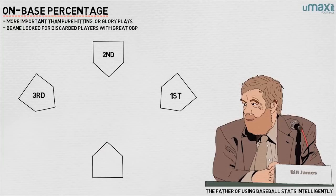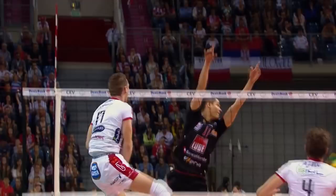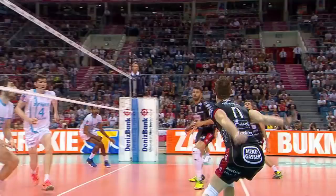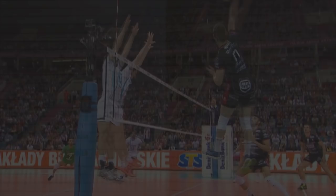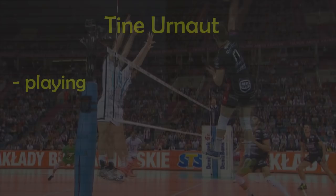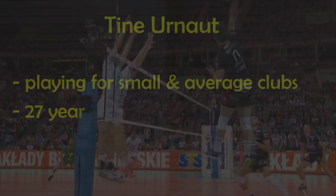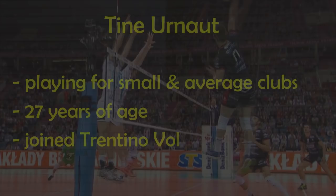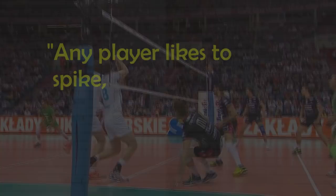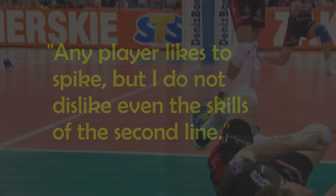What are the reflections of Moneyball in volleyball? Until 2015, the name of Tine Urnaut had been barely heard in the volleyball world. He was playing for small or average clubs like Latina or Vibo Valentia, and was 27 years of age at the time. Then Radostin Stoychev, the head coach of Trentino Volley, and his staff noticed something everyone else didn't. When joining Trentino, Urnaut said: 'Any player likes to spike, but I do not dislike even the skills of the second line.'